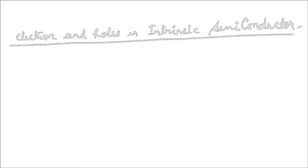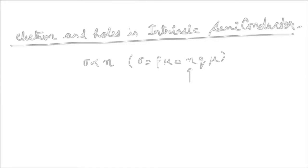The conductivity of any semiconductor crystal is directly proportional to n, the number of free electrons. If we represent conductivity by sigma, then sigma equals rho times mu, which equals n times q times mu, where n is the number of free electrons, q is the charge of an electron, and mu is the mobility of electrons or holes.